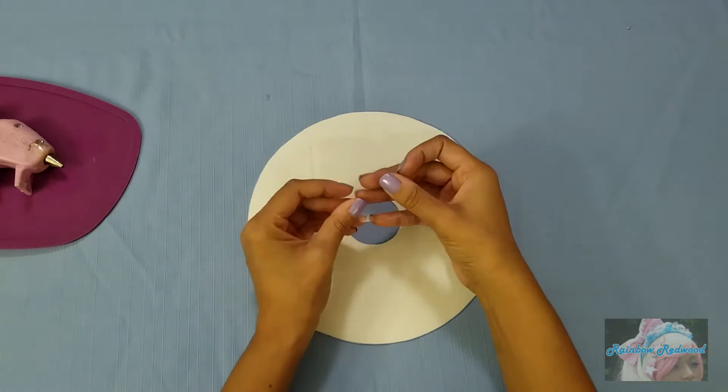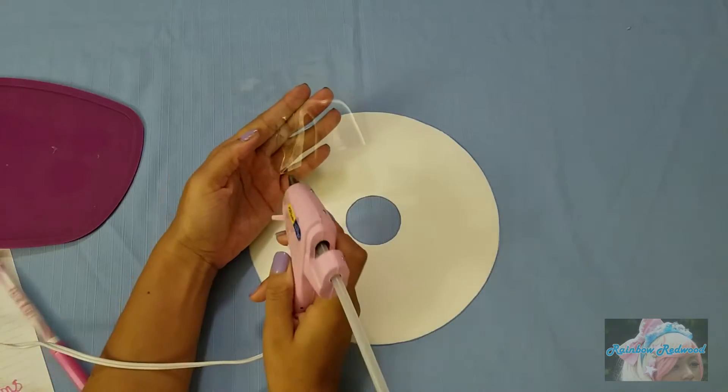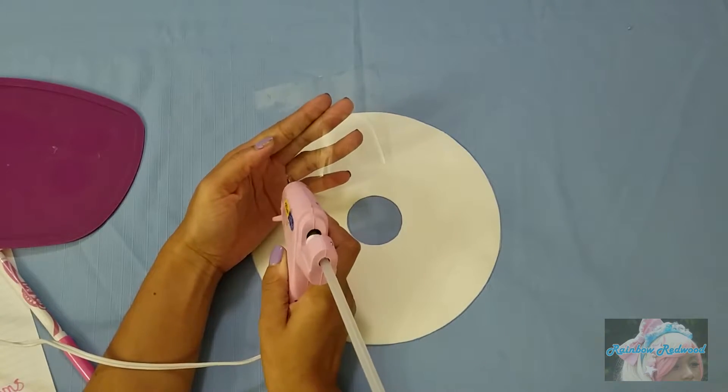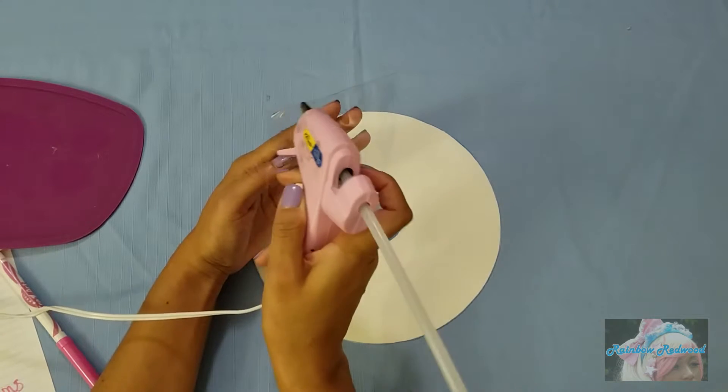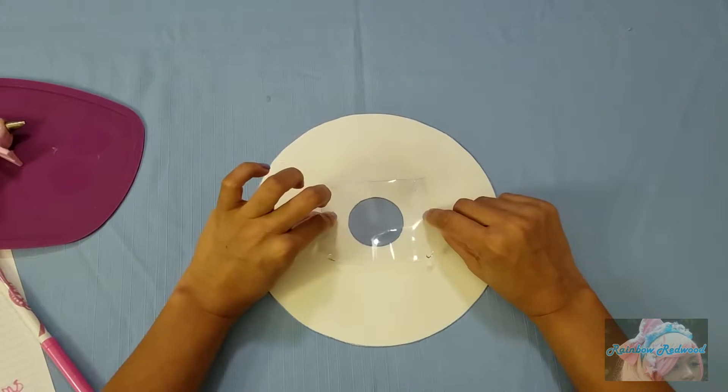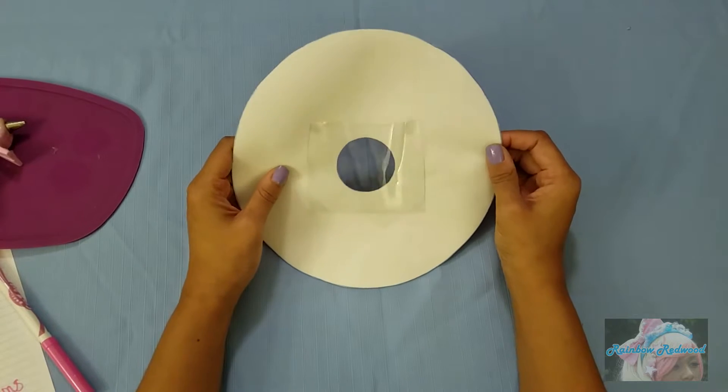Grab your clear plastic vinyl piece, put just a little bit of dab of hot glue in each corner, then lay it over the hole and repeat this on the other piece.